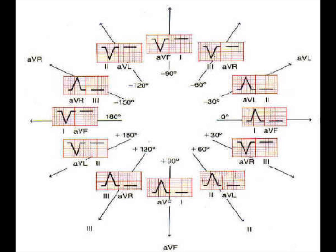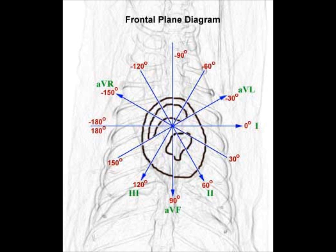The frontal plane leads view the heart from the front of the body. It sees the body as if it were flat. The directions include superior, inferior, right, and left. The six leads view heart in the frontal plane: the three bipolar leads and three unipolar leads.